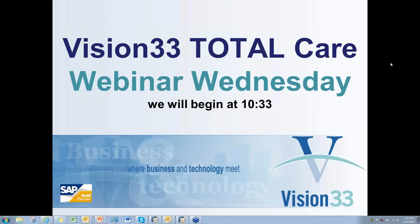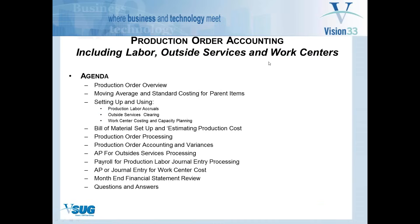Today is the last one of those and we're going to cover production order accounting. We have about 15 people on the line. In its most simplest form, a production order is used to simply remove raw inventory components, combine them into a finished product.